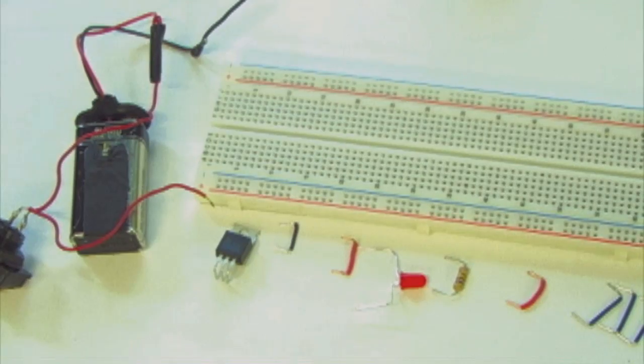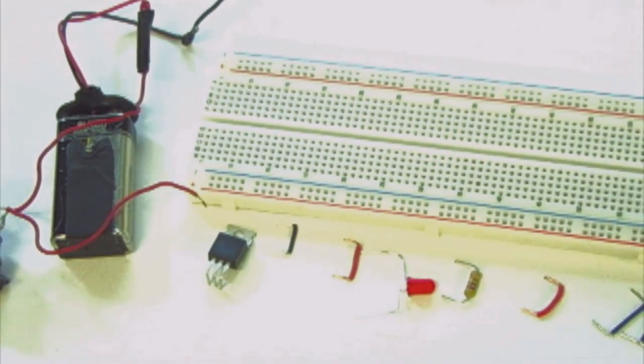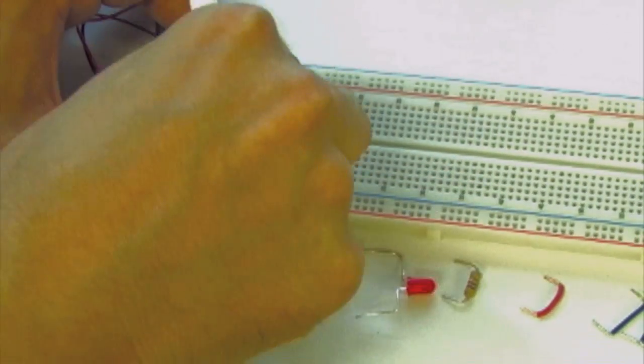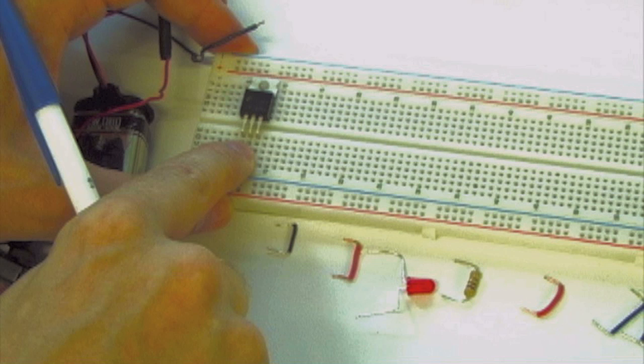We have laid our parts out on the table. First, we connect the 7805 voltage regulator. The three pins can go into any three rows.